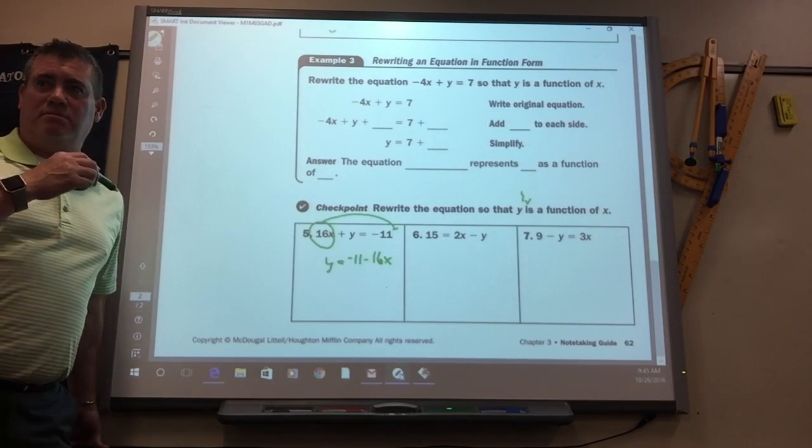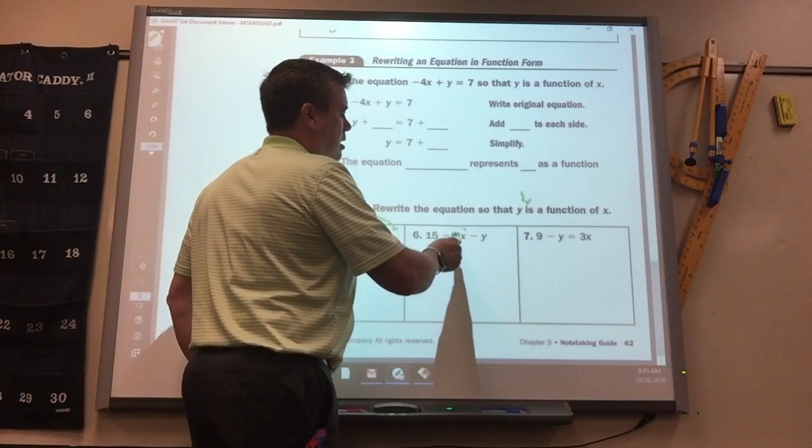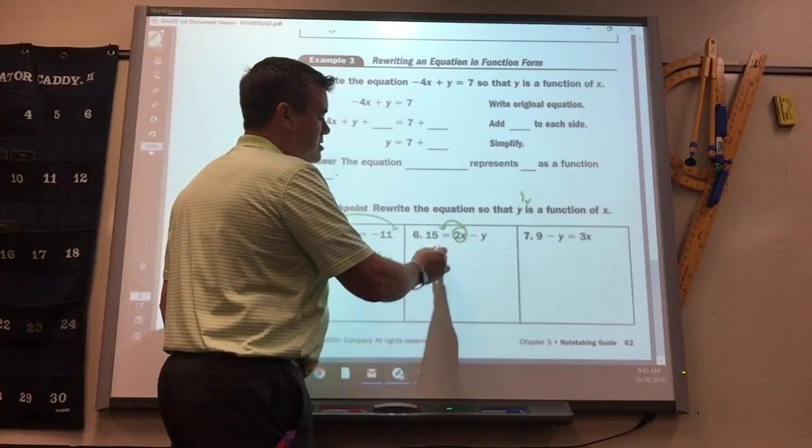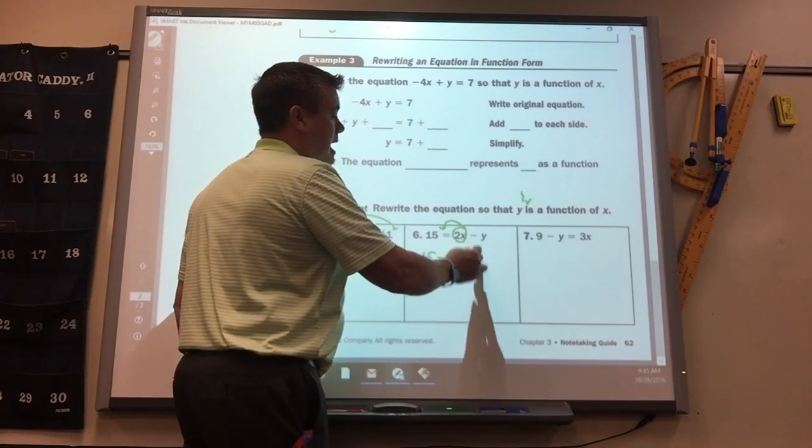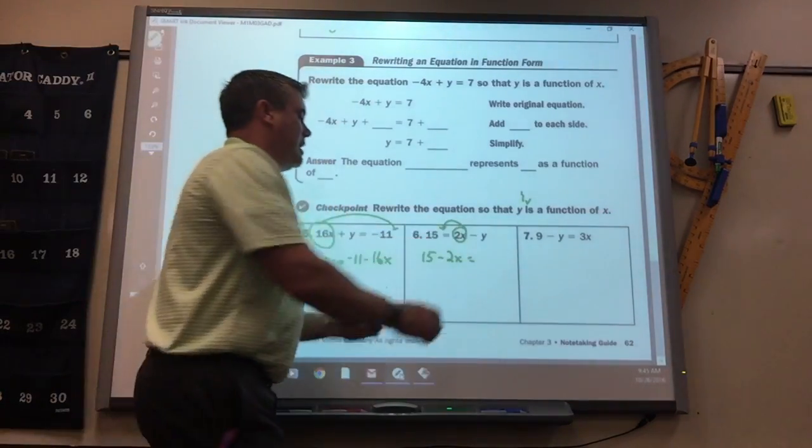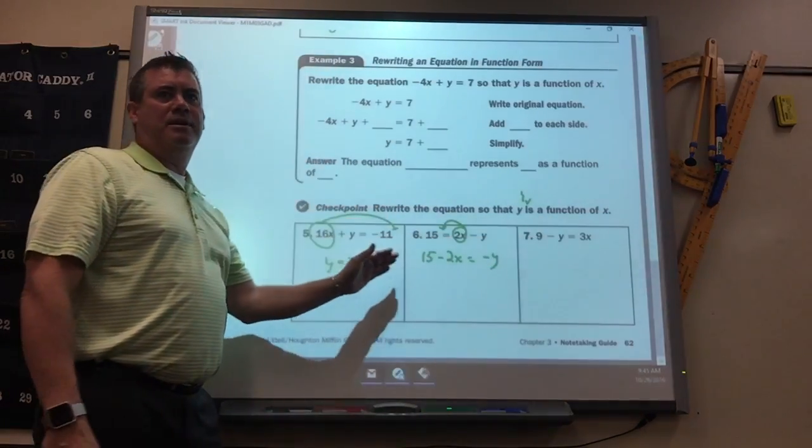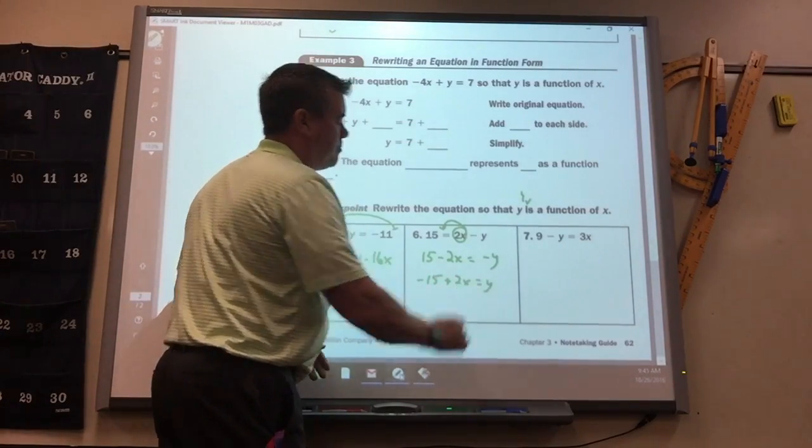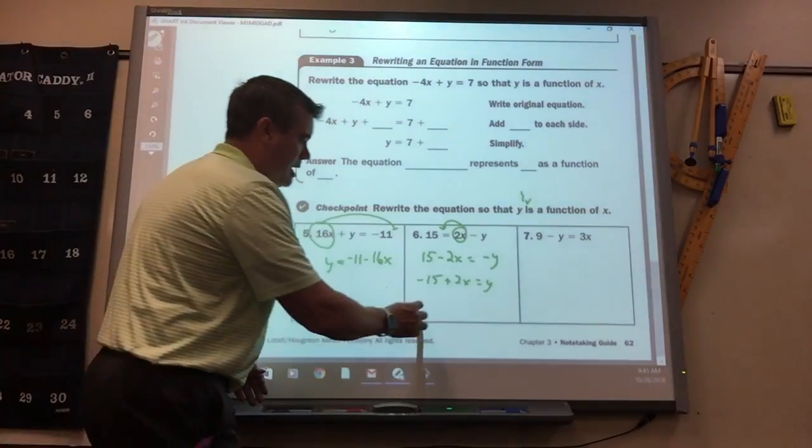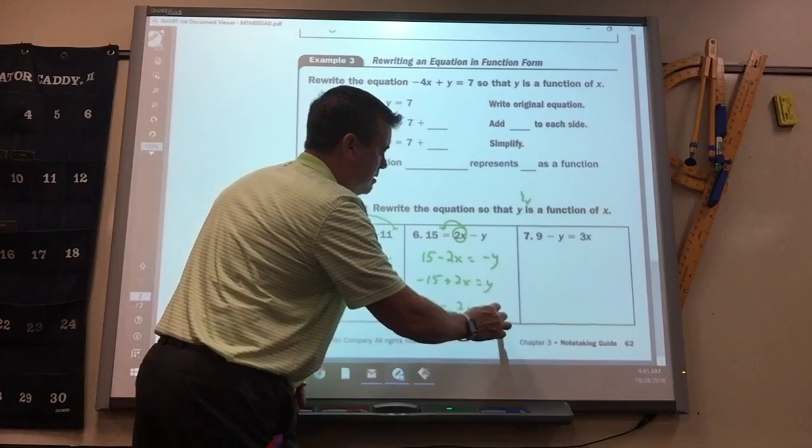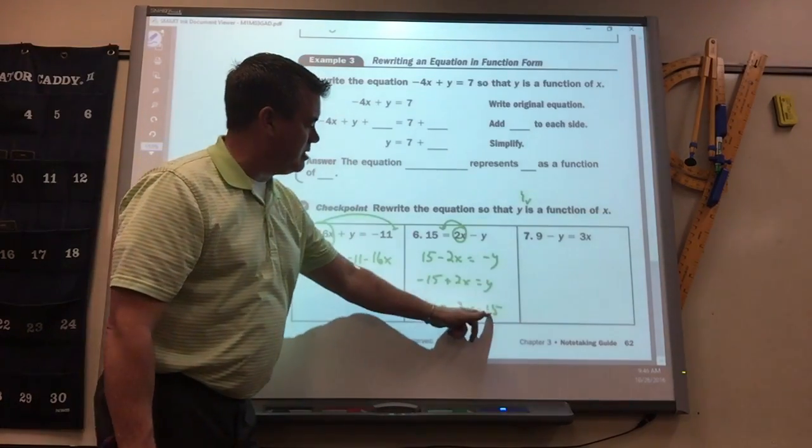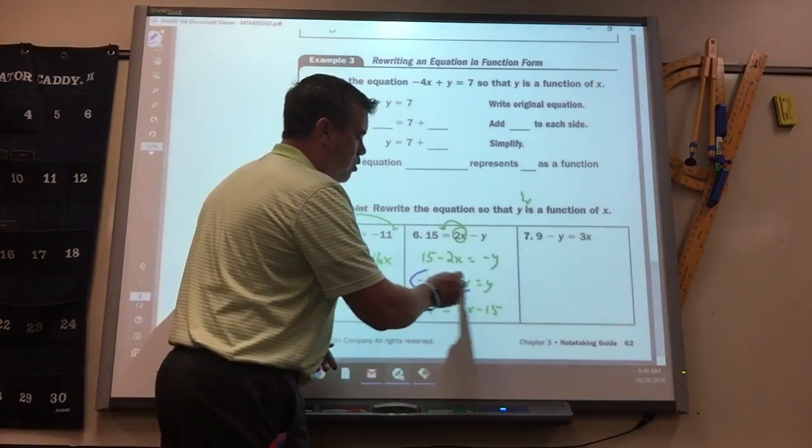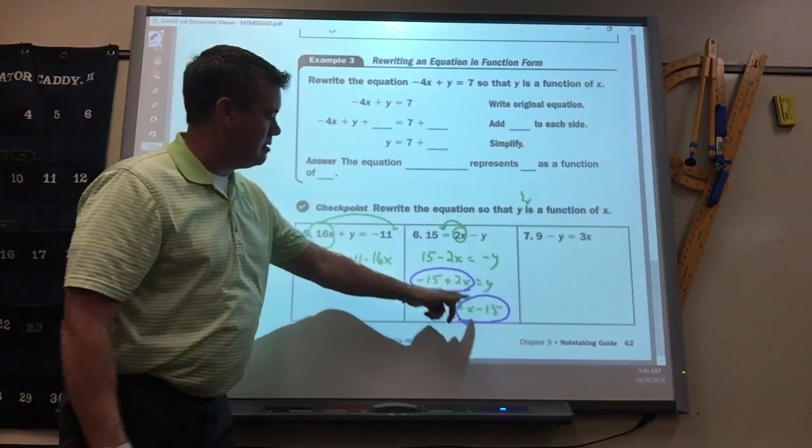This should be pretty easy, I hope, right? Here, to get the Y by itself, I've got to get this out of there. It's not attached to it, so you just move it. The 15 stays there. This would change to minus 2X. And now, this is where some people get wrong. It's negative Y. So, if the letter is negative, what do you do to everything? Change all the signs. Negative 15 plus 2X equals Y. Now, this can be written differently. You could write it as Y equals 2X minus 15. The Y is still positive. The 15 is still negative. The 2X is still positive. So, it doesn't matter what order you put those in, as long as you keep the sign in front of it.